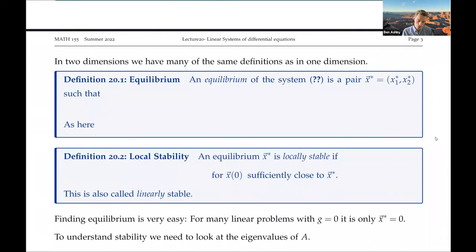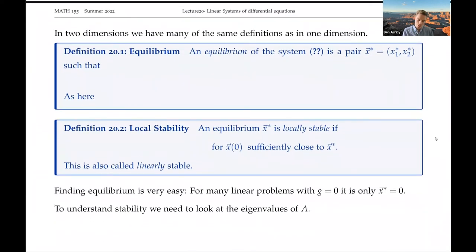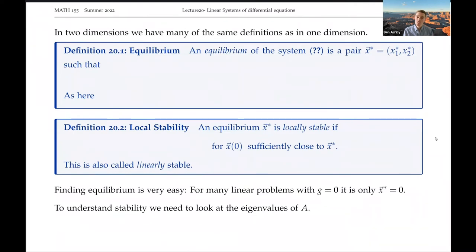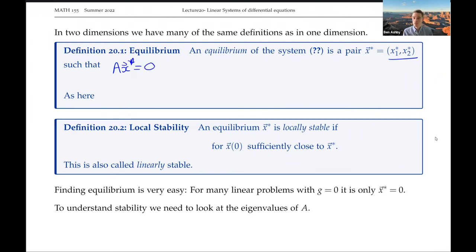In general for a linear system, we say that an equilibrium of this system is a pair x* = (x1*, x2*) such that Ax* equals zero. For a linear system, we're typically going to have x* equal to zero.